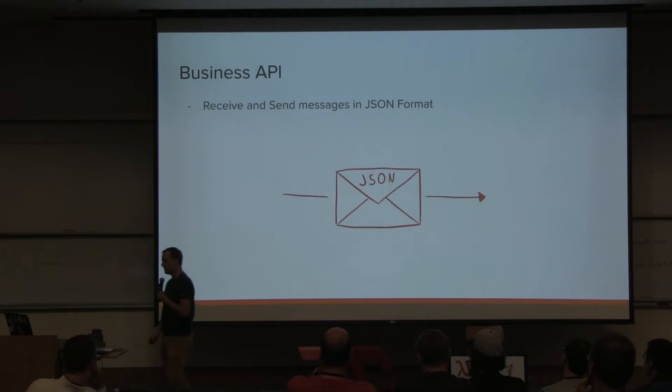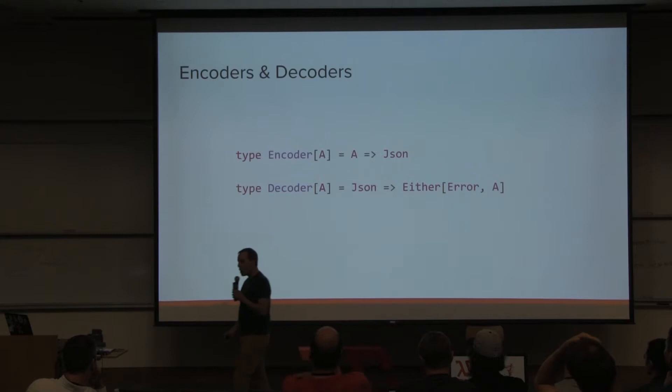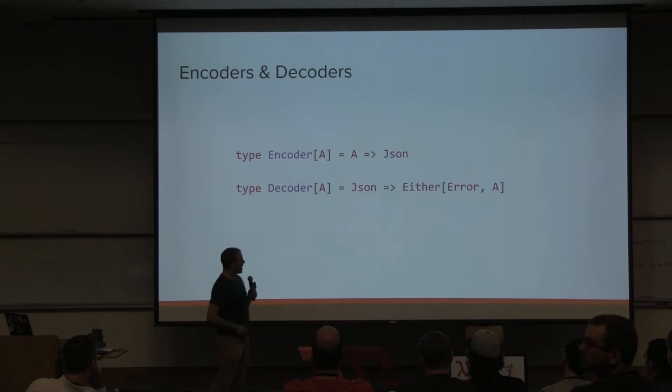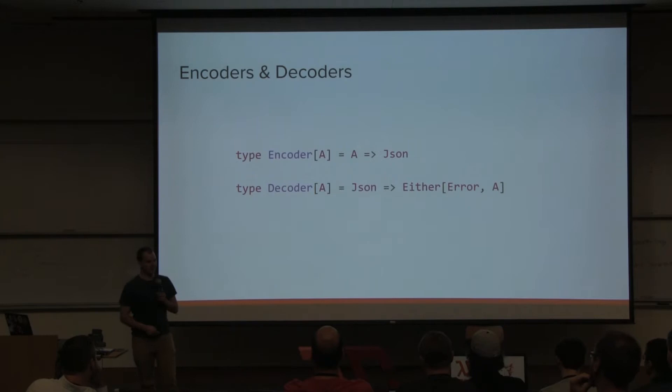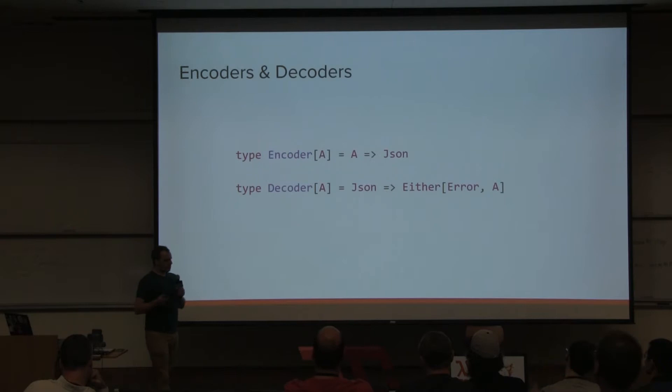One thing you always have to come up with are encoders and decoders. Fundamentally, they are type class instances where an encoder of A is a function that takes some of your domain types and transforms it to JSON — in this talk JSON is just going to be a string for simplicity's sake. Vice versa, a decoder takes JSON and gives you back your A.